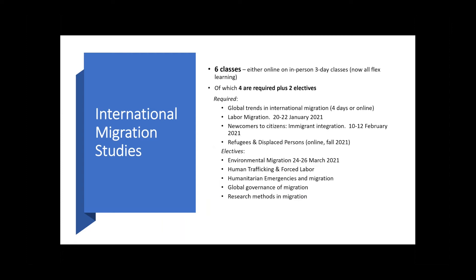The certificate program requires six classes, some taught online and some taught in in-person three-day classes. Right now, everything is flex learning or online. Flex learning through the School of Continuing Studies means you're in real-time online from nine to five every day for three days, as compared with our online courses, which can be taken over a number of weeks. You need six classes — four required, plus two electives.